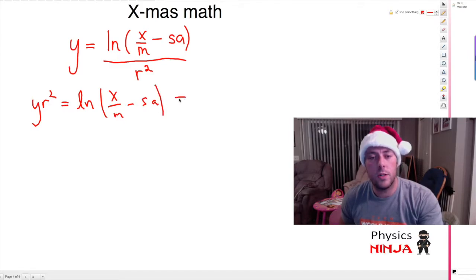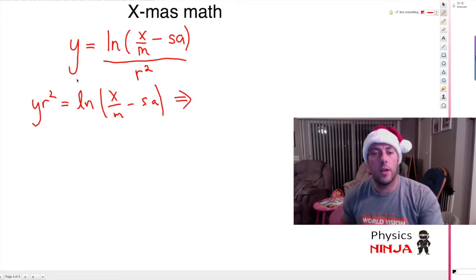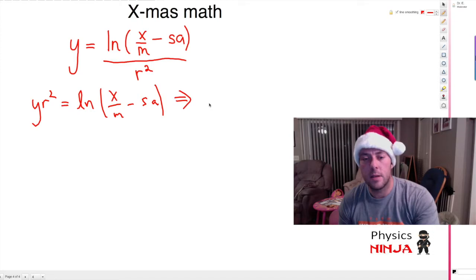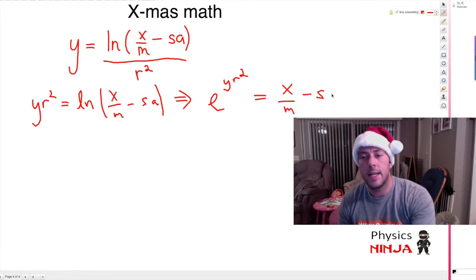The next thing to do is we want to get rid of this natural log. We're going to take the exponential of both sides. So we get e to the yr squared must be equal to x divided by m minus sa.